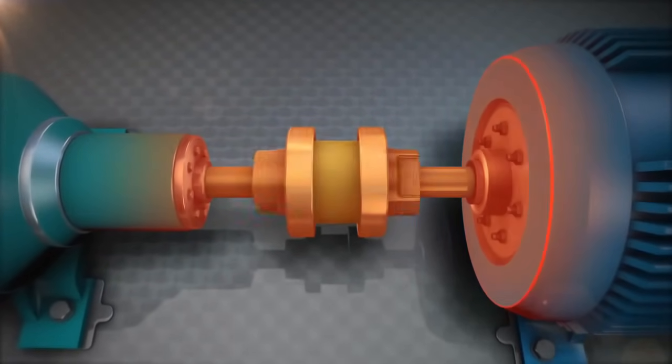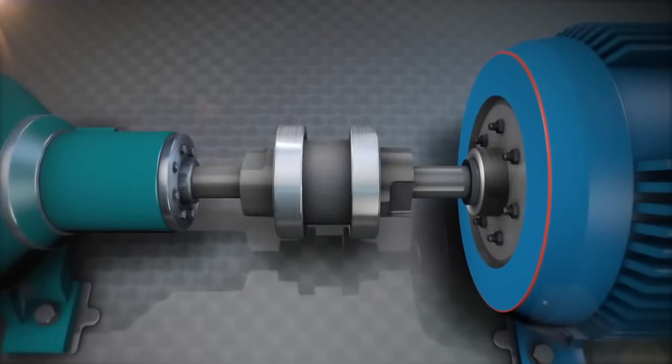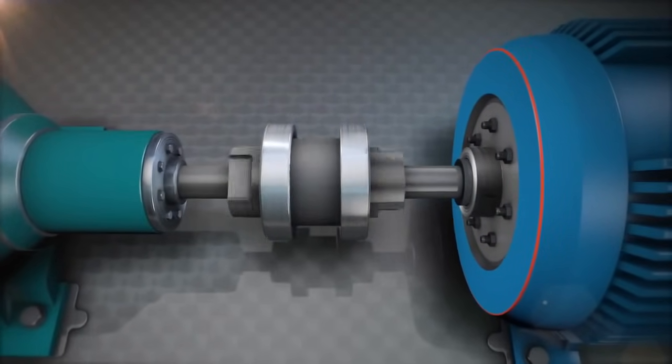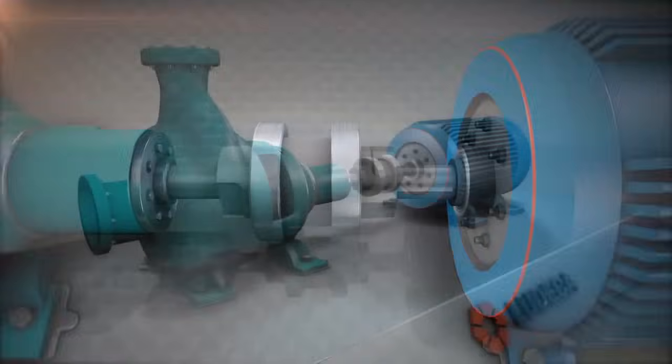Good shaft alignment allows machines to run more efficiently, reducing power consumption while increasing output. Let's look at how it's done.